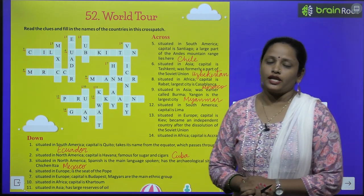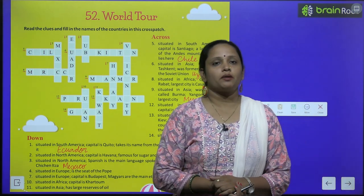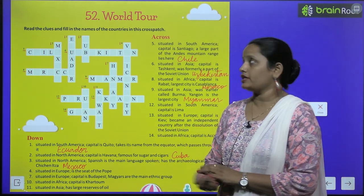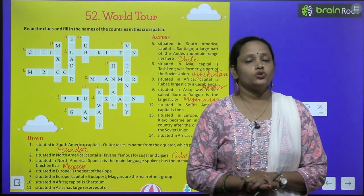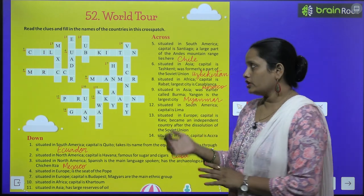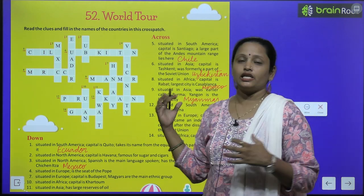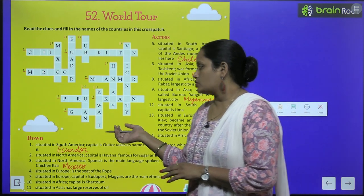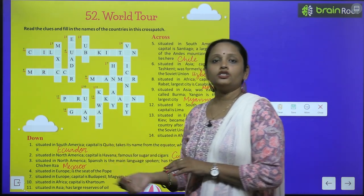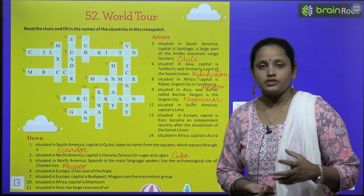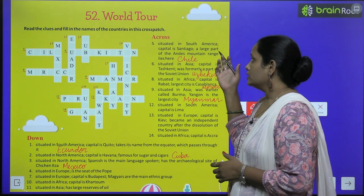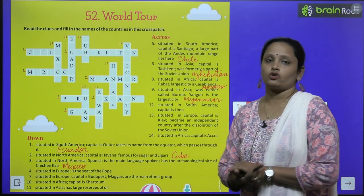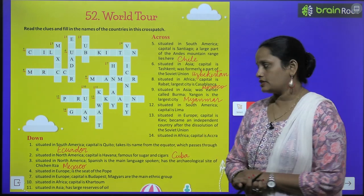Now children, let's move on to the next chapter, which is chapter number 52, and the name is 'World Tour.' So here we will learn about different parts of the world. There are two columns — across and down — and you have to solve the puzzle.